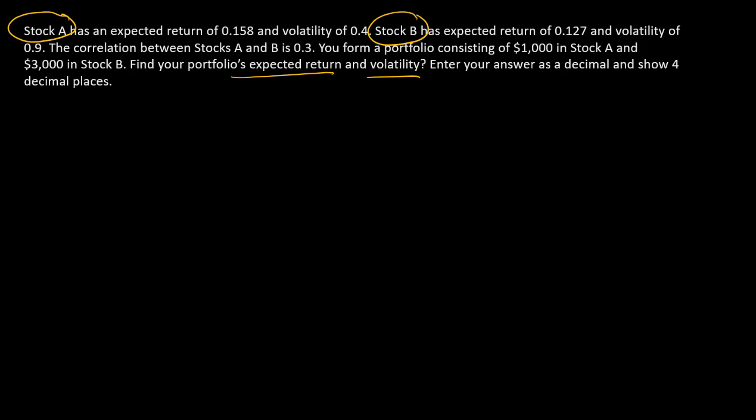So let's start with expected return. Expected return for a two-stock portfolio is a weighted average of the expected returns of its two components, and so that's going to be the weight in stock A times the expected return of stock A plus the weight of stock B times the expected return for stock B.